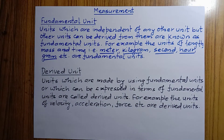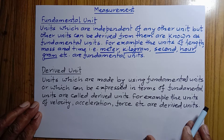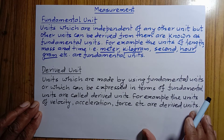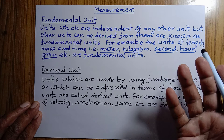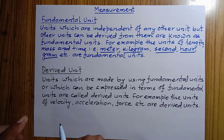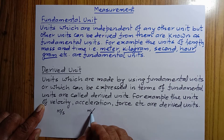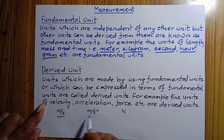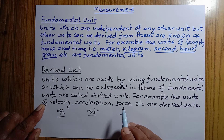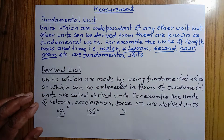On the other hand, units which are made by using fundamental units, or which can be expressed in terms of fundamental units, are called derived units. For example, the unit of velocity is meter per second, the unit of acceleration is meter per second squared, and the unit of force is Newton. These are derived units because they are made by using fundamental units.